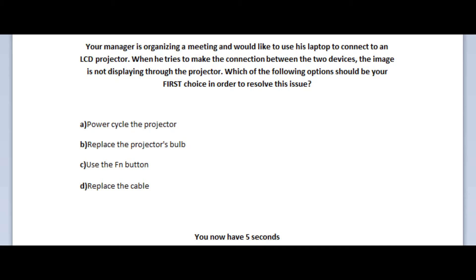Let us jump to our second question. The next question states: Your manager is organizing a meeting and would like to use his laptop to connect to an LCD projector. When he tries to make the connection between the two devices, the image is not displaying through the projector. Which of the following options should be the first choice in order to resolve this issue? Is it A. Power cycle the projector? Is it B. To replace the projector's bulb? Is it C. To use the FN button? Or is it D. To replace the cable? You now have 5 seconds.